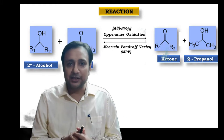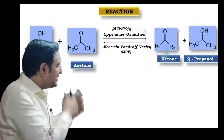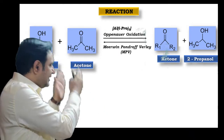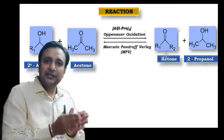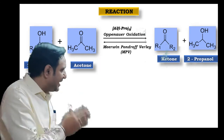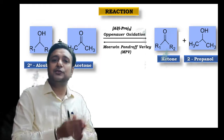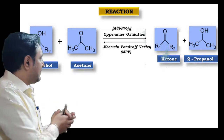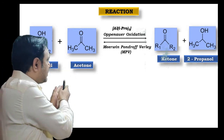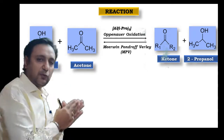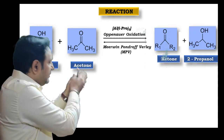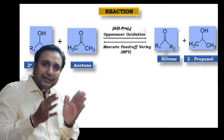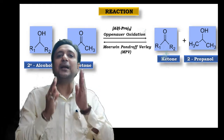The reaction is shown on your screen. When a secondary alcohol is reacted with acetone in the presence of aluminium isopropoxide, it is converted into a ketone plus 2-propanol. From this reaction you can see that the OH from the first compound is transferred to the second compound, and the ketonic group is transferred from the second compound to the first compound. This is the reaction of Oppenauer oxidation.